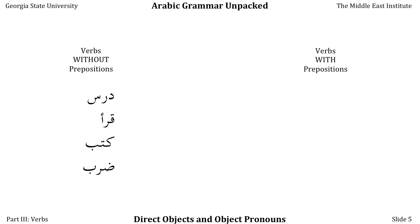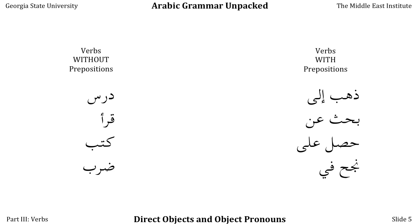We contrast that with verbs that always must have a preposition, like ذهب إلى — you don't just go something, you go to someplace. You don't just بحث something; you بحث عن something — you look for it. حصل على: when we use حصل we always use the preposition على before what we're getting. نجح في: in Arabic you succeed in something and it always takes its preposition. Some verbs can be used with or without prepositions — حضر by itself means to attend, but حضر إلى means to come to or arrive at something.